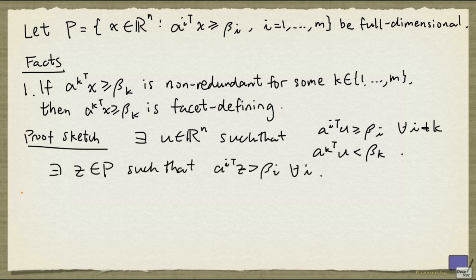So let's look at a sketch of what is happening here. So suppose this is my inequality, A_k^T x ≥ β_k, and we will have other inequalities defining P.